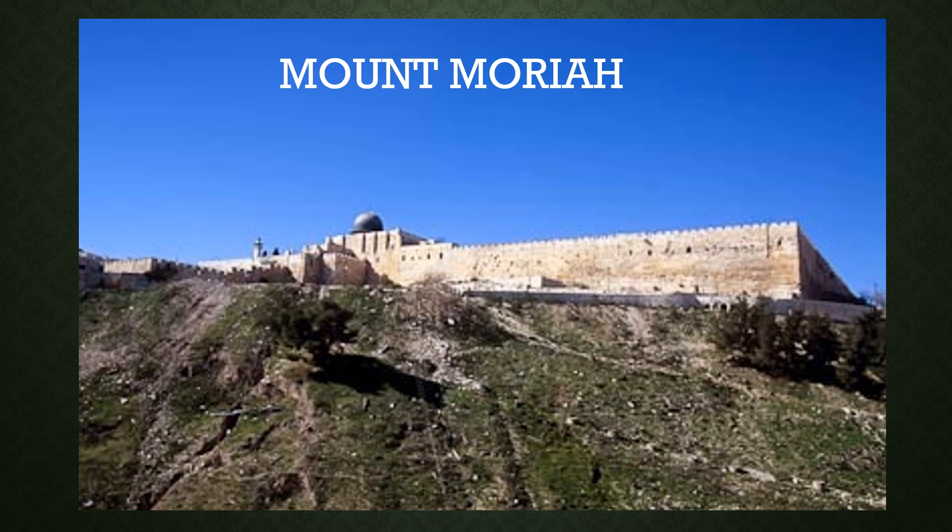It eventually was situated near the village of Salem, and therefore the city became known as Jerusalem. It is the area which Nabi Musa was ordered to go to. Nabi Dawud conquers this area 480 years after the Israelites leave Egypt.